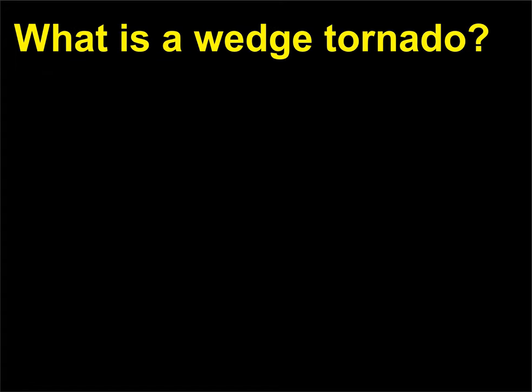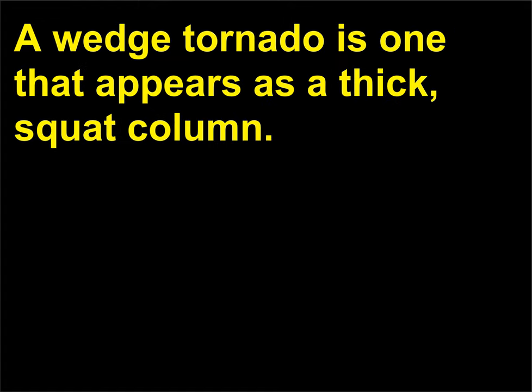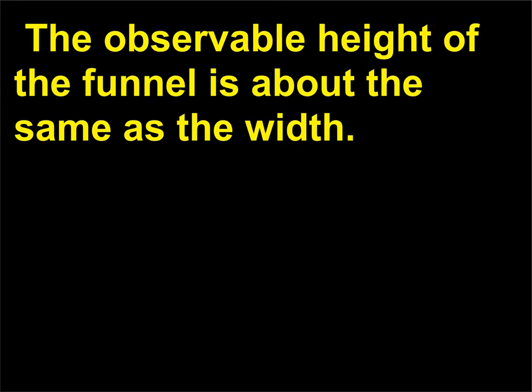What is a wedge tornado? A wedge tornado is one that appears as a thick, squat column, where the observable height of the funnel is about the same as the width.